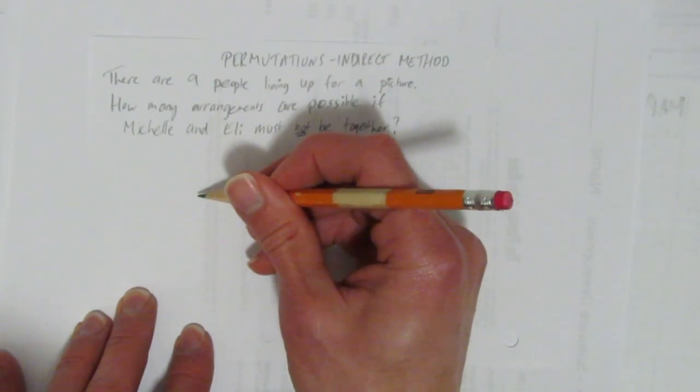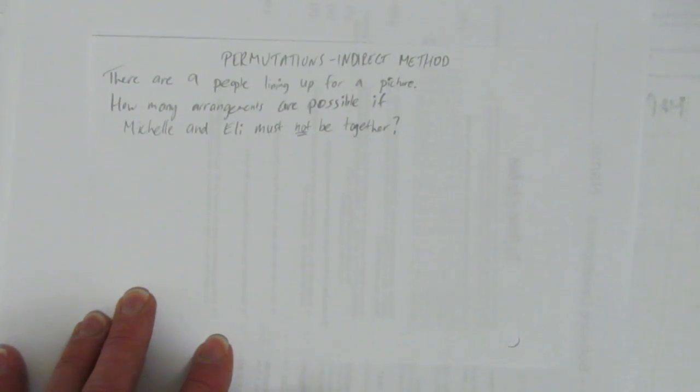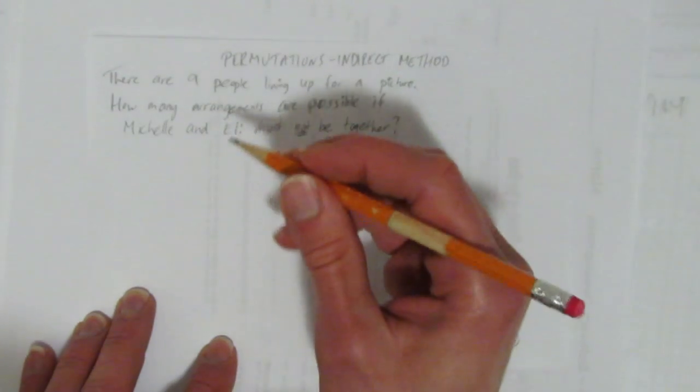There could be people before Michelle and people after Eli. It turns out there's tons and tons of possibilities. It would be better to do the indirect method.